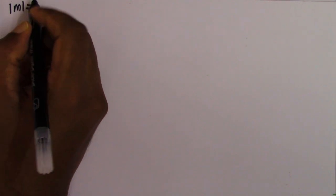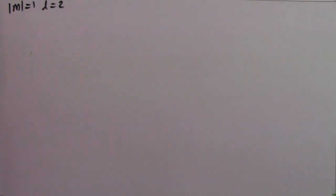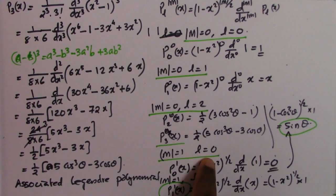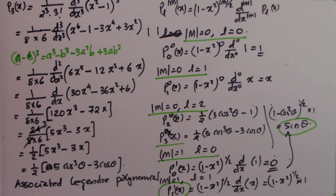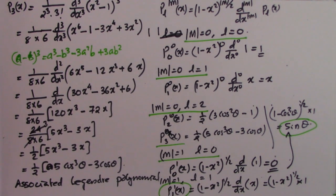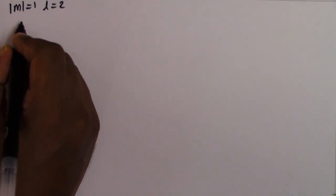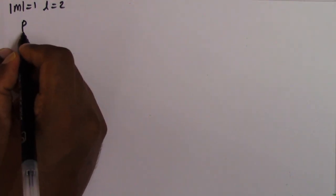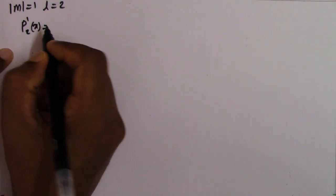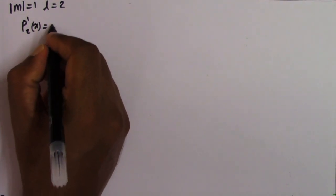Now let's look into m=1 and l=2, because in the previous video we went up to m=1 and l=1. Now we are going to m=1 and l=2, and in this case we can calculate the value of the associated Legendre polynomial. That is P_l^m(x), which is P_2^1(x), equal to (1 - x²) raised to m/2.